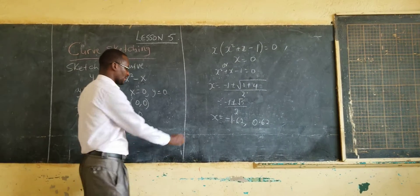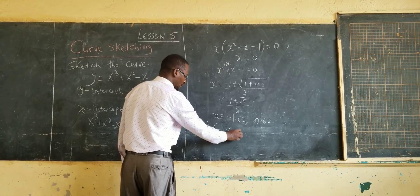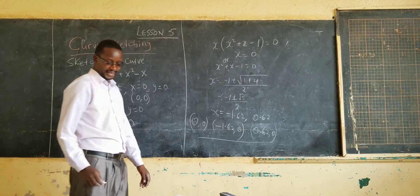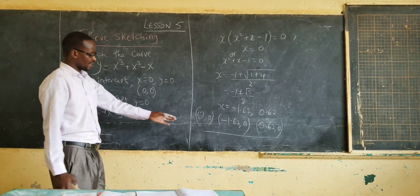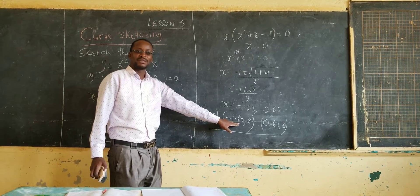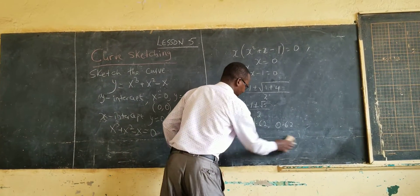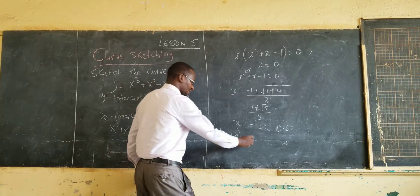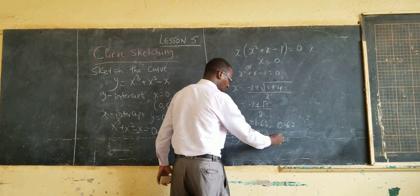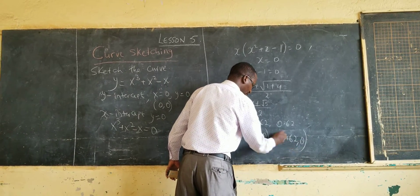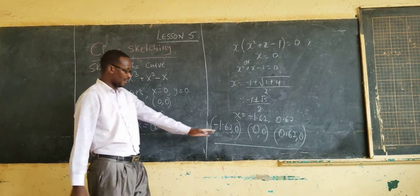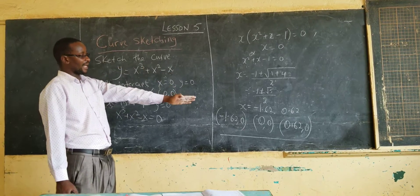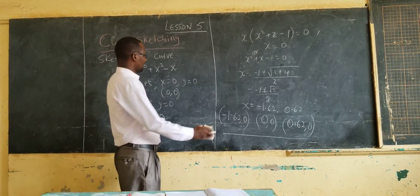So these are the x-intercepts. I had written them starting with 0, but I should have started with −1.62 since it appears first on the number line. Let's rearrange them properly: the three points are (−1.62, 0), then (0, 0), and then (0.62, 0). It is important to arrange the points as they appear on the number line, from left to right, because we are sketching the curve.